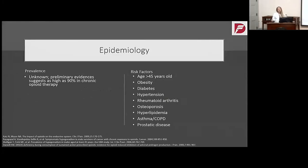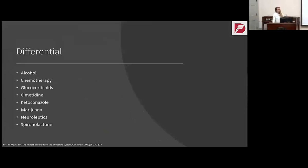Opiate-induced androgen deficiency — we're lucky to have much evidence and to know the clinical implications of decreased sex hormones in this patient population. The prevalence is unknown; preliminary evidence suggests as high as 90% in chronic opiate therapy in a few larger studies. Risk factors that can compound this complication include increasing age, increasing weight, and other comorbidities. Opiates are not the only common offender — chronic alcohol use and marijuana use can also contribute to decreased sex hormones, so it's important to screen for these.